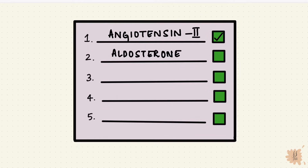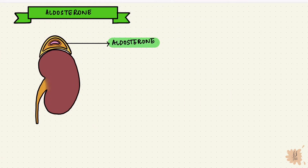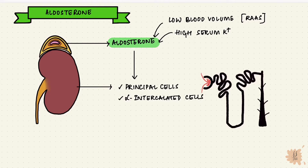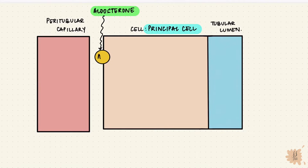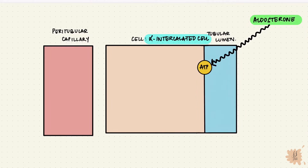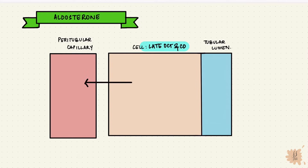Second is aldosterone. Aldosterone is produced in response to low blood volume via the renin-angiotensin-aldosterone system, and also when serum potassium levels are high. It has receptors in the principal and alpha intercalated cells of the late distal convoluted tubule and the collecting duct. On the principal cells, it stimulates sodium-potassium ATPase and the epithelial sodium channels, increasing sodium reabsorption and potassium secretion and hence potassium excretion. On the alpha intercalated cells, it increases hydrogen ATPase activity, so hydrogen ion secretion. Put together, aldosterone reabsorbs sodium and secretes potassium and hydrogen ions.